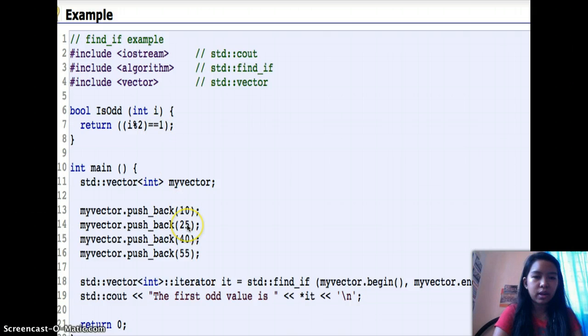Next is 25. 25 modulo 2 is 1. Since 1 equals equals 1, this can be our first odd value.